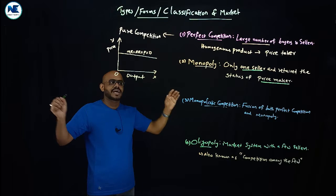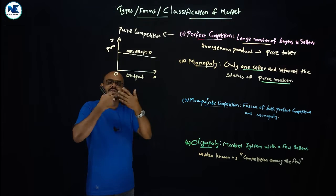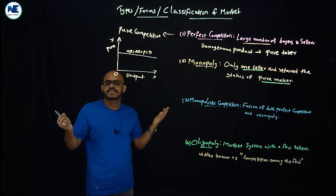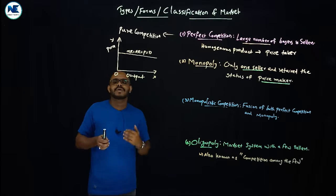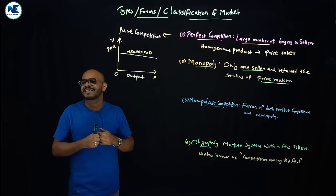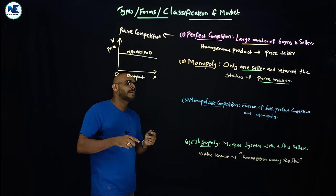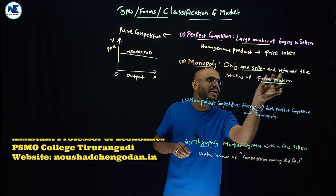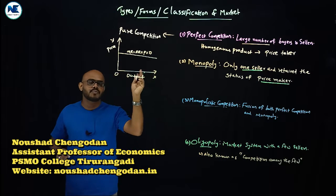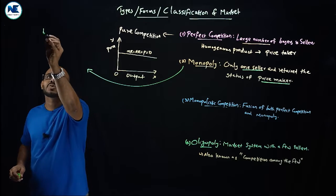Under monopoly there are no substitutes for the product. Entry into the market is restricted — no free entry, unlike perfect competition where there is no restriction. Monopoly is the extreme opposite of perfect competition. There is only one seller who controls the entire market and retains the status of price maker.